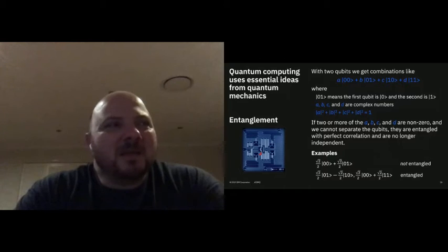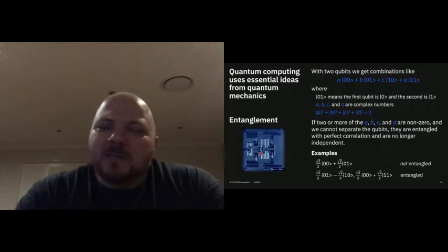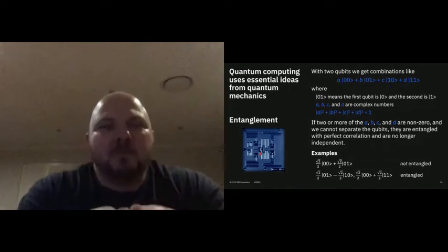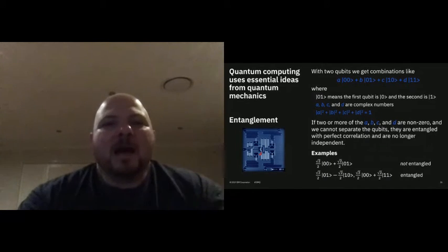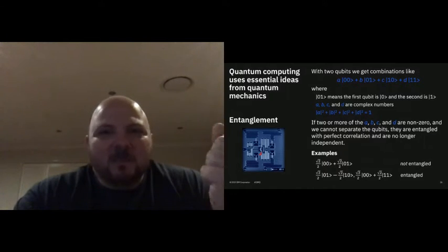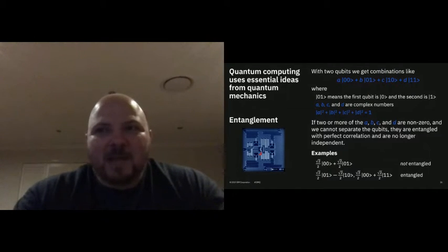Entanglement is an even tougher one to describe — we understand what it is, but we don't understand how it works at this stage. Basically, in the quantum world, if you entangle two quantum objects and move them apart, if I measure one of those, I intrinsically, without a doubt, know the state of the other one — no matter how far apart they are.